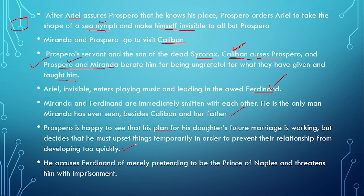But Prospero decides he must slow things down temporarily to prevent their relationship from developing too quickly. He accuses Ferdinand of merely pretending to be the Prince of Naples and threatens him with imprisonment. Ferdinand is Alonzo's son and is the Prince of Naples — Prospero knows this but is slowing things down so the relationship builds slowly, not too fast.